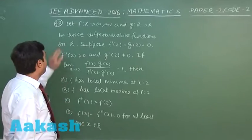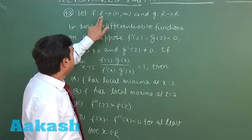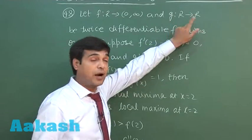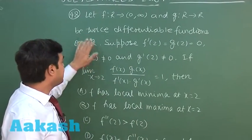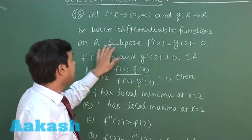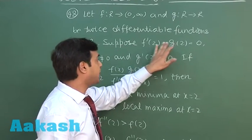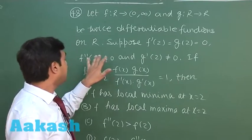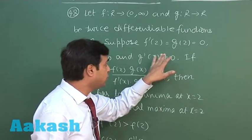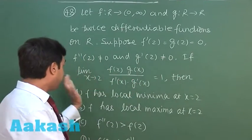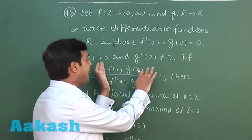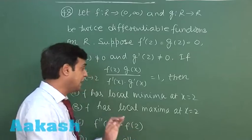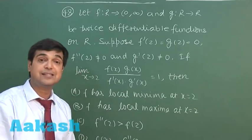Let us take the next one that is 48th. Let f from R to 0 to infinity and g from R to R be twice differentiable functions on R. Suppose f dash 2 equals g of 2 equals 0, f double dash 2 is non-zero, g dash 2 is non-zero. If limit x approaching to 2, f(x) g(x) upon f dash x g dash x equals 1, then which of the following are correct?